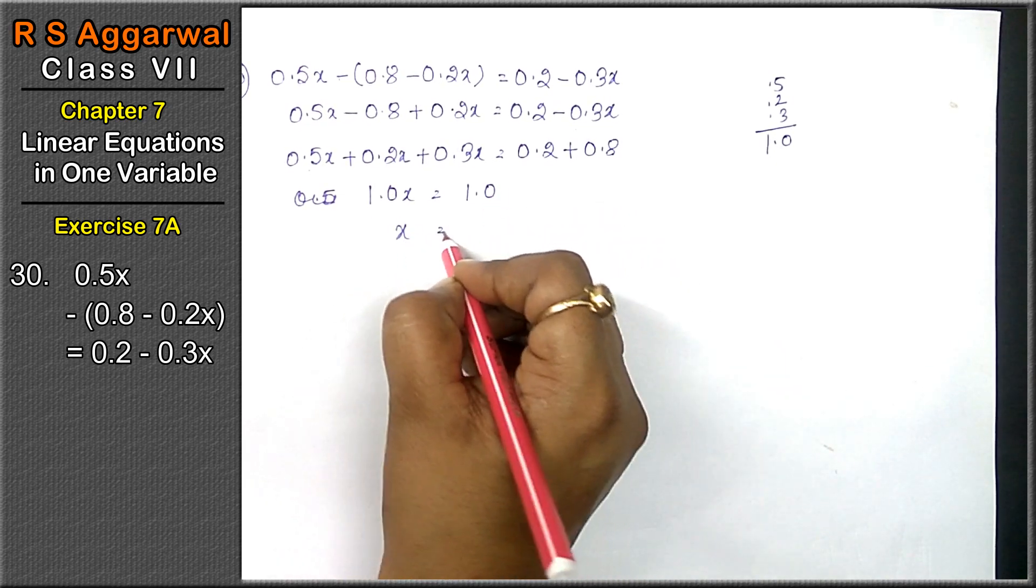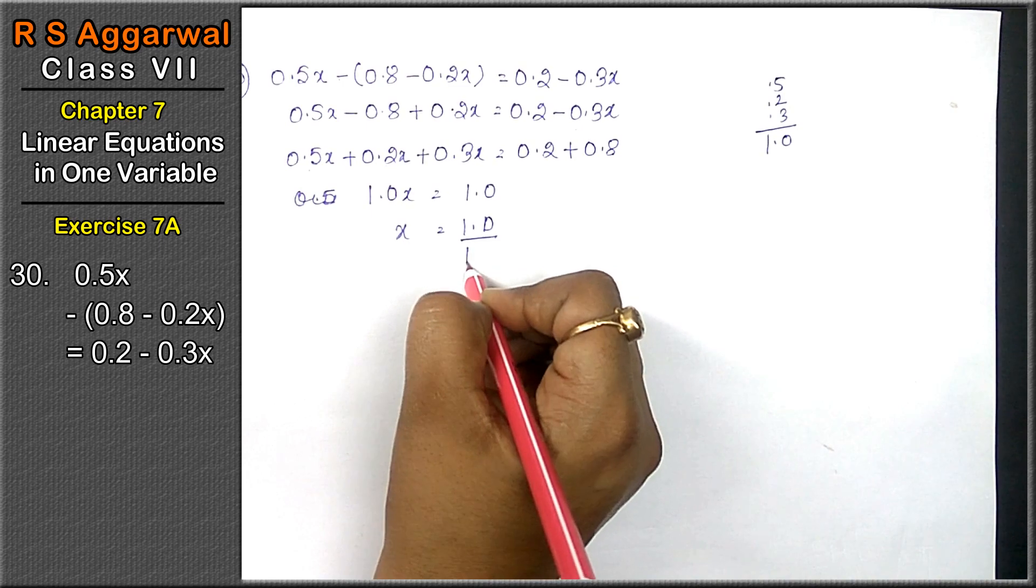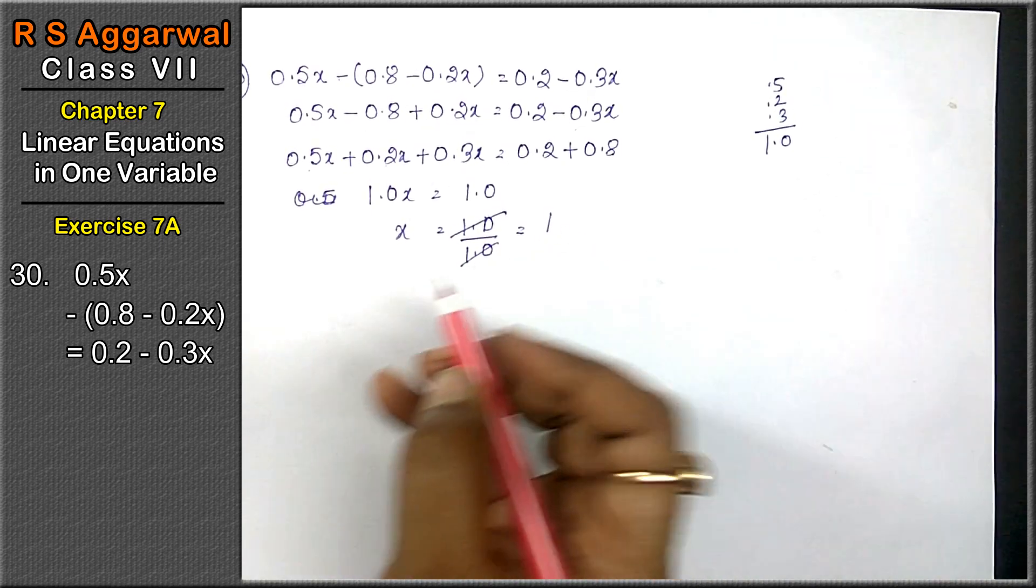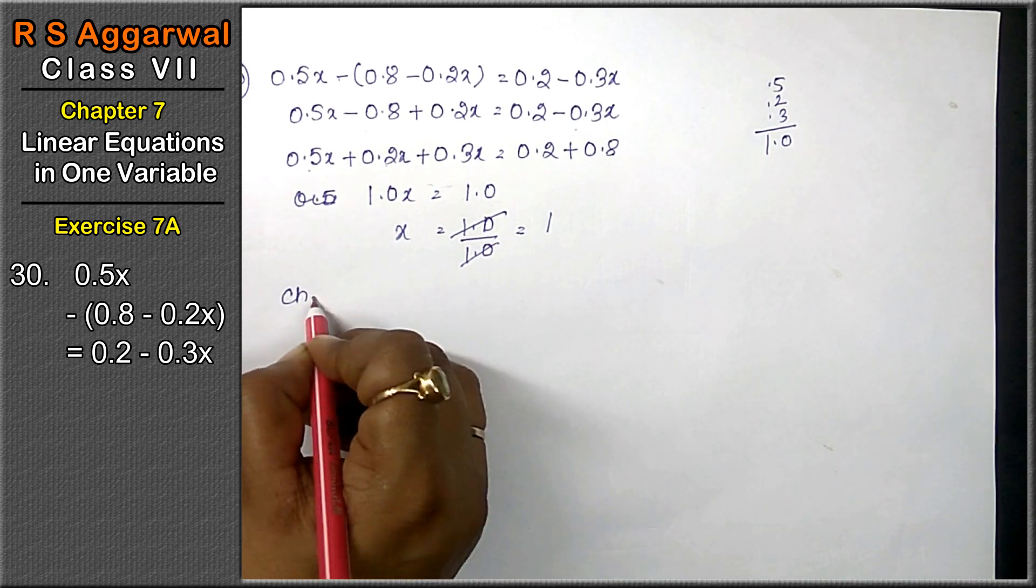That means x equals 1.0 upon 1.0. That means they cancel, and x equals 1. Let's check.